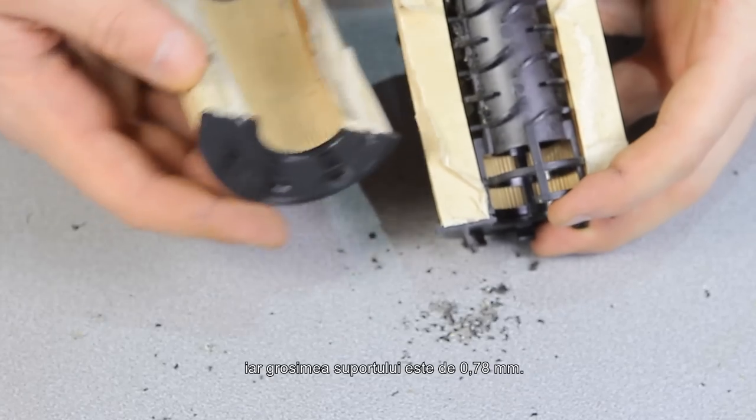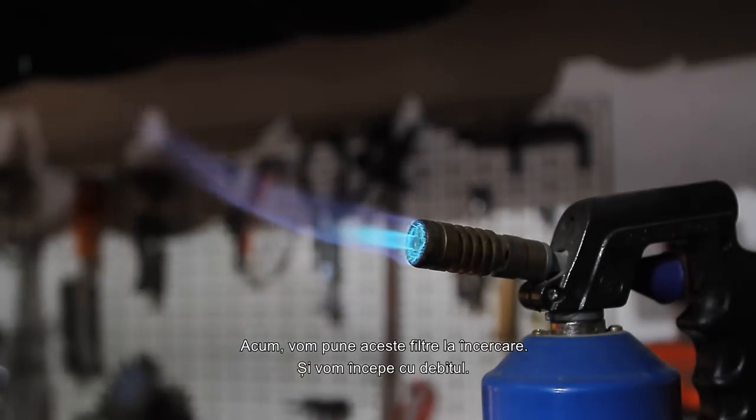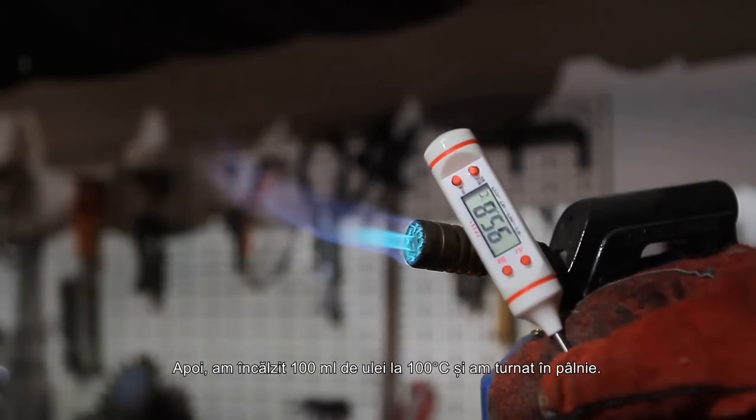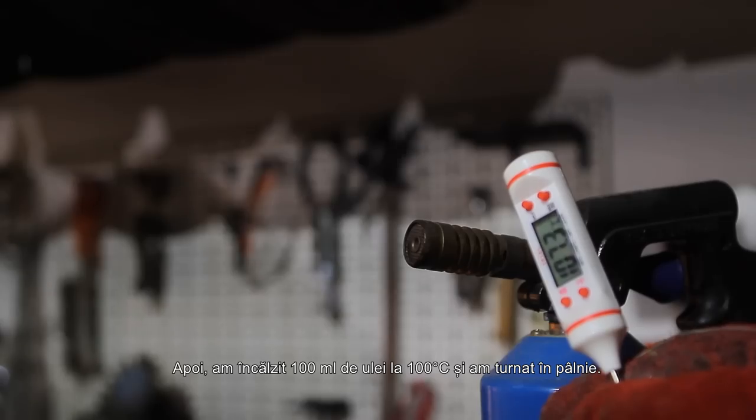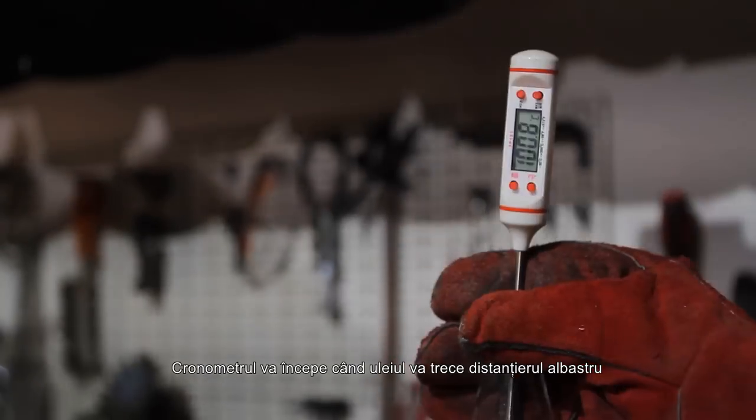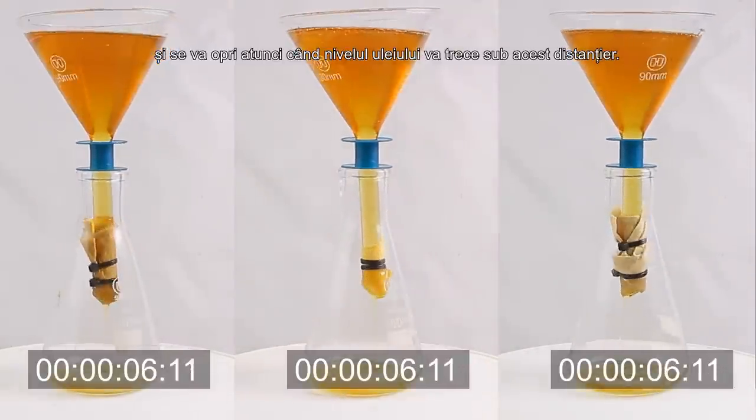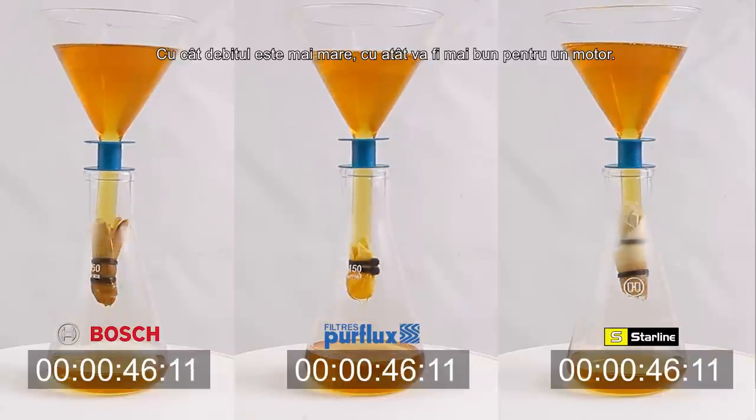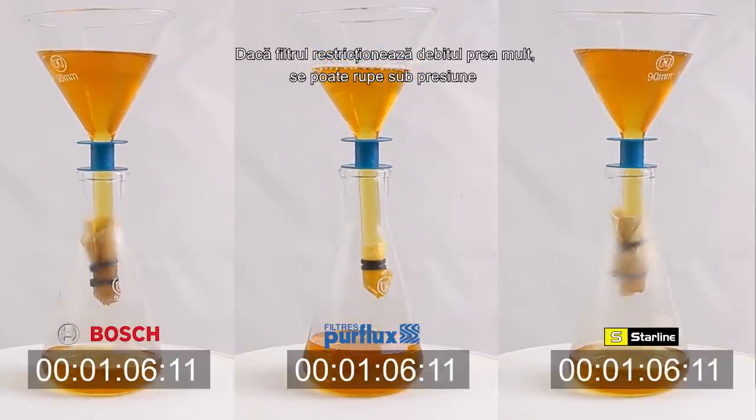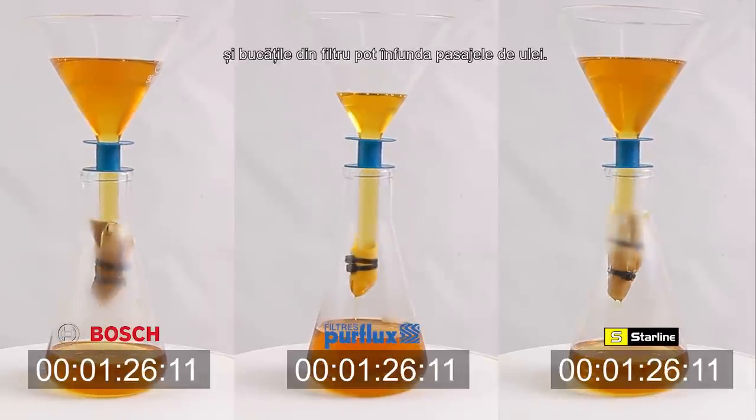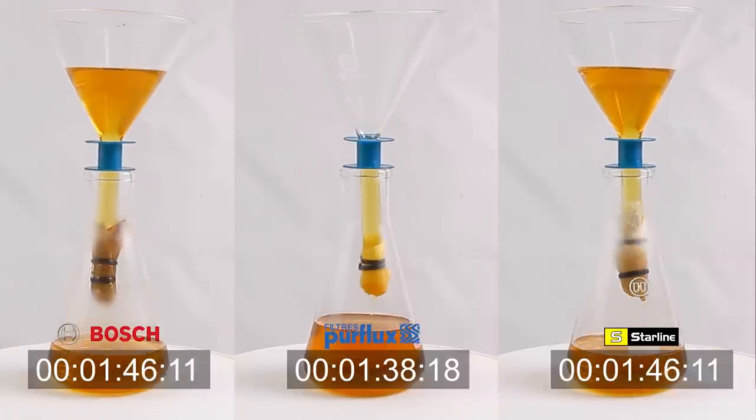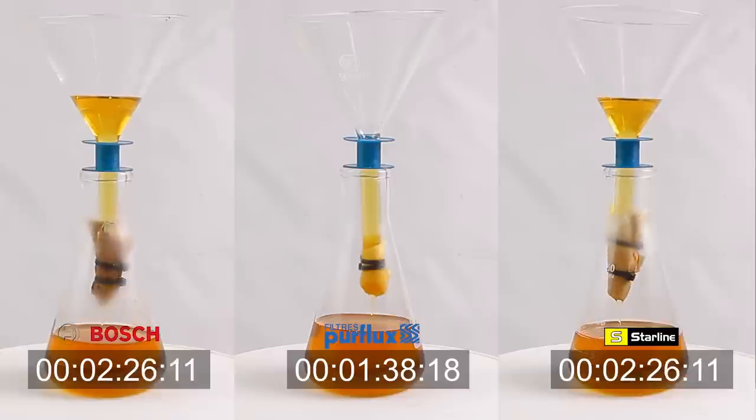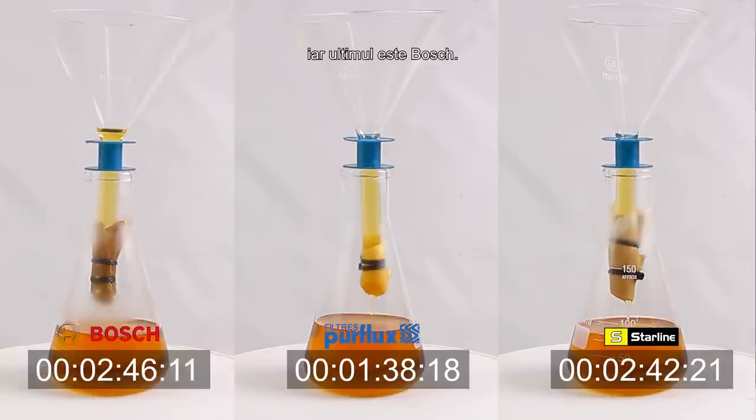Now let's put these filters to the test and we'll start with the flow rate. In this test I've cut samples from each one and placed them at the end of a funnel, and 100 milliliters of oil was then heated to 100 degrees Celsius and poured into the funnel. The timer will start when the oil passes the blue spacer and will stop when the oil level goes under this spacer. This test illustrates the capacity of a filter to maintain a high flow rate, which is vital to an engine. The higher the flow rate, the better it will be. If the filter constrains the oil flow too much, it can break under the pressure and pieces from the media can clog oil passageways. Nobody wants that. Purflux is first, Starline is second, and last is Bosch.